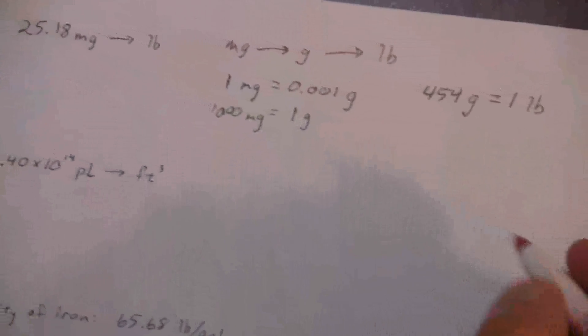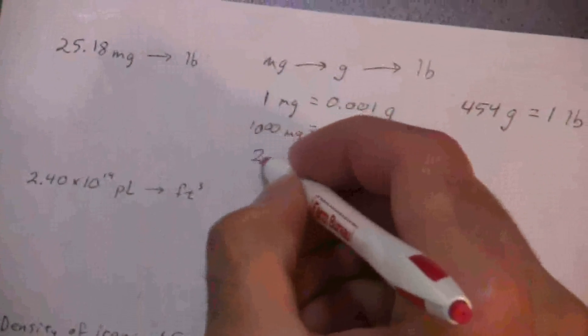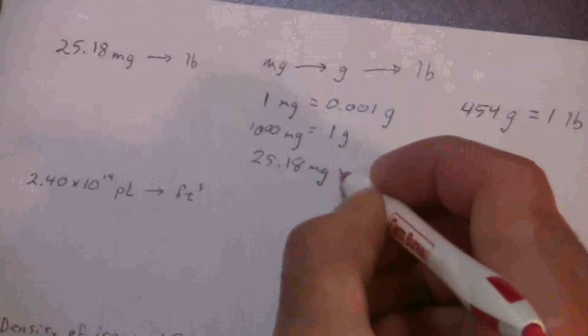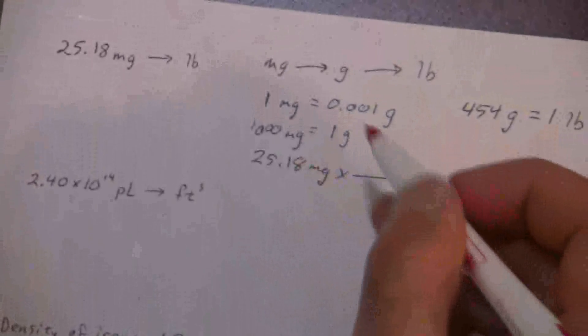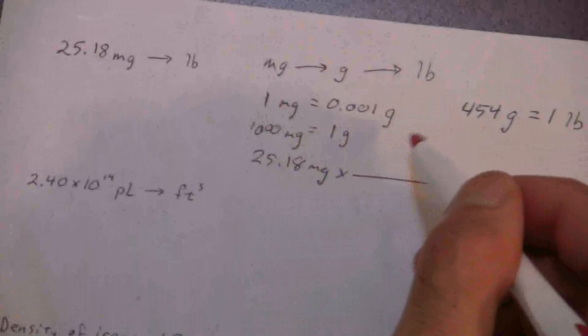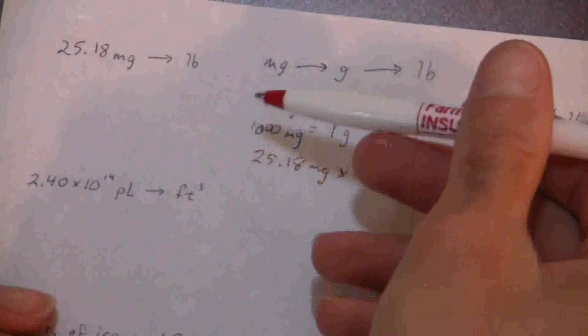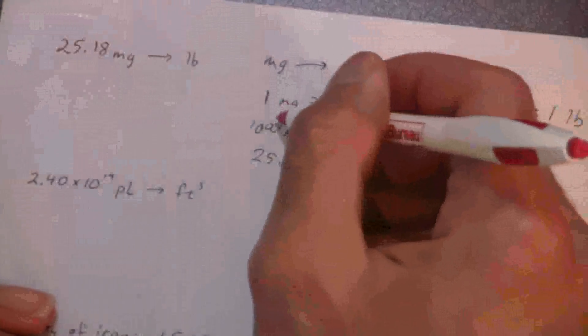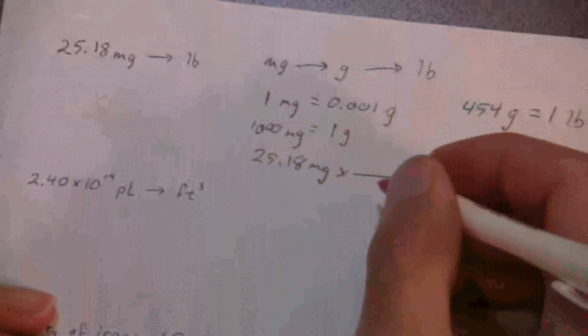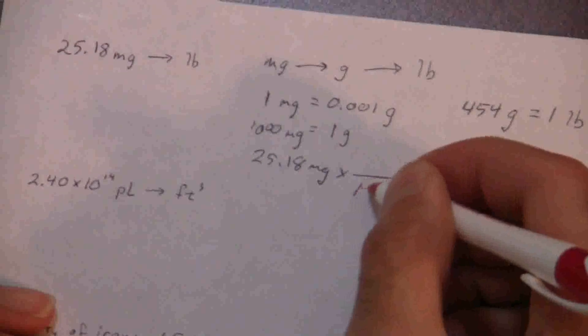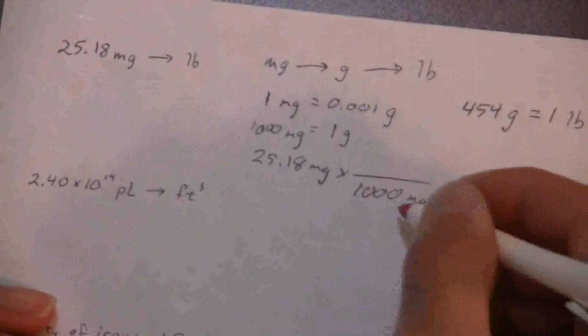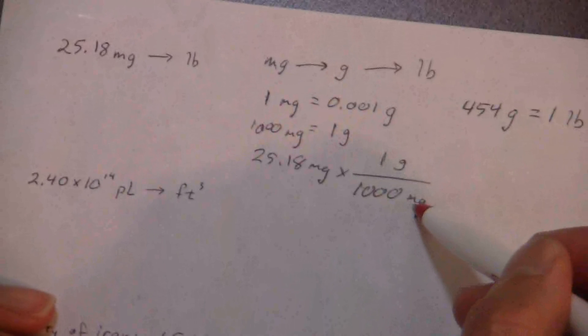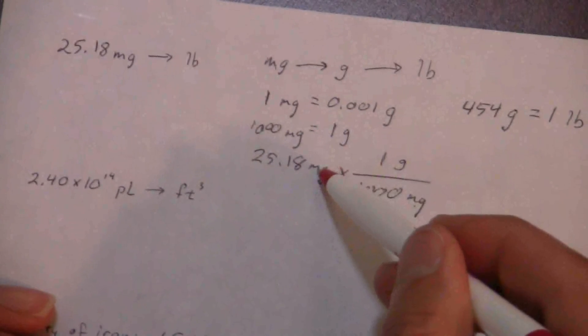All right, so let's go ahead and work out this problem. We have 25.18 milligrams. Now I'm going to put in my first conversion factor. Okay, so let's just use the 1000 milligrams is one gram. Now you'll notice I put that on the bottom. I put that on the bottom because I need milligrams on the bottom to cancel.